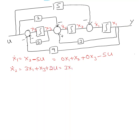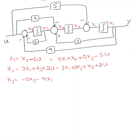For x2 dot, we get 3x1 plus 0x2 plus x3 plus 2u. For x3 dot, I have minus 5x3 minus 9x1. It's a good idea to start with x1 first but it doesn't matter. Adding the remaining terms: x3 dot equals minus 9x1 plus 0x2 minus 5x3 plus u. Output y equals x1.